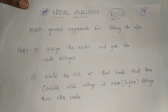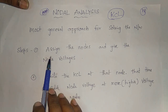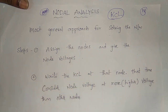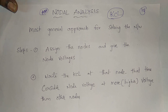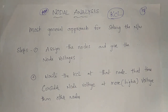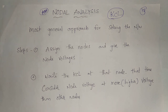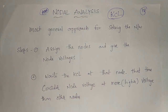Step 1 is to assign the nodes and give the nodal voltages. When solving, assign nodes where two or more circuit elements join. Then we can write the KCL at that node and apply KCL.